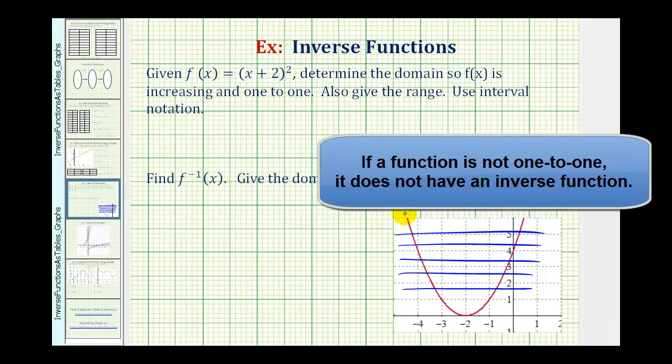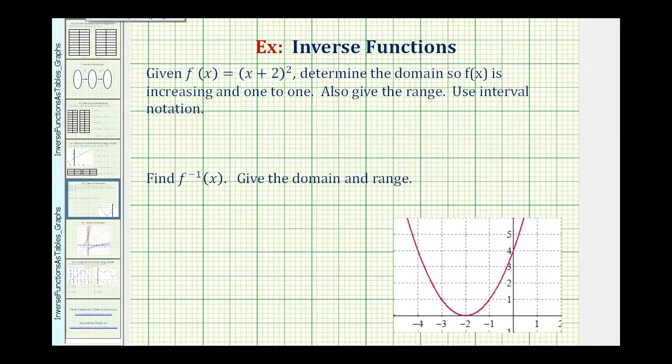Notice the function is also decreasing on the left and increasing on the right. So if we consider this function only from the vertex to the right, the function is increasing and it's also one to one because horizontal lines would only intersect this half of the graph at one point.